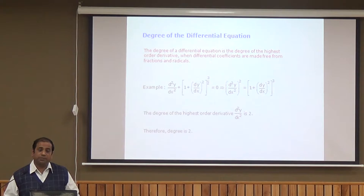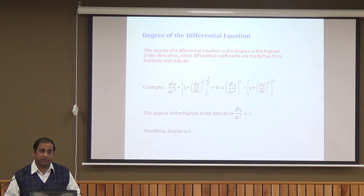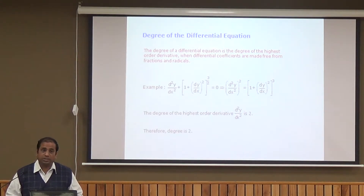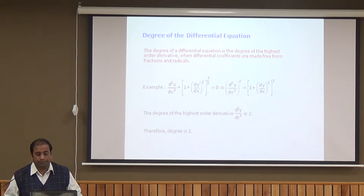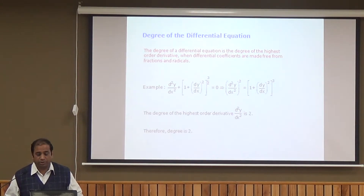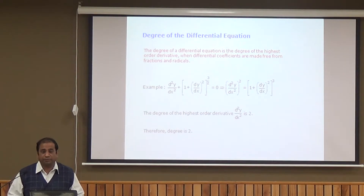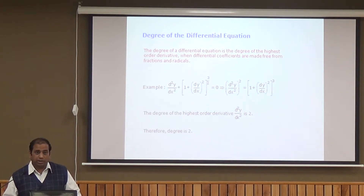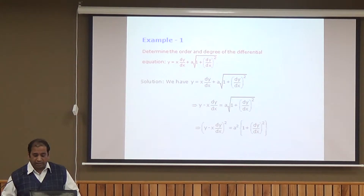Now we come to the degree of a differential equation. The degree is the degree of the highest order derivative where the differential coefficients are made free from fractions as well as radicals. For example, d²y/dx² + [1 + (dy/dx)²]^(3/2) = 0 simplifies, after squaring both sides, to (d²y/dx²)² = [1 + (dy/dx)²]³. The highest order is 2 and the power of that expression is 2, so both the order and degree of this differential equation are 2.